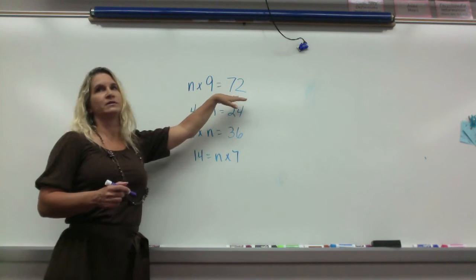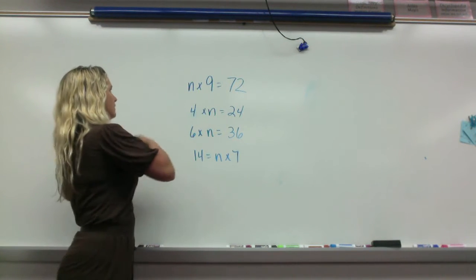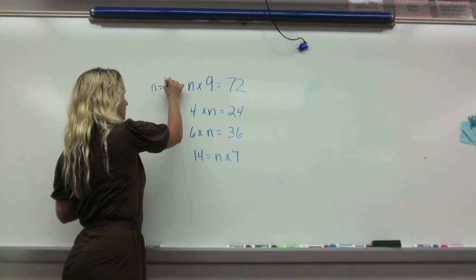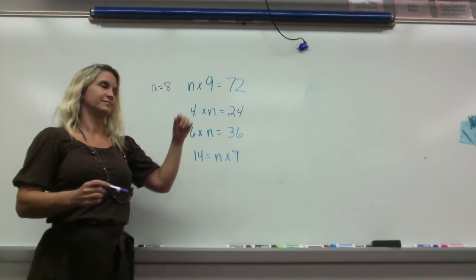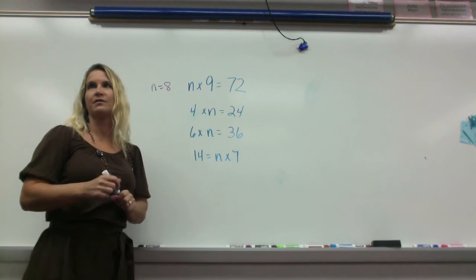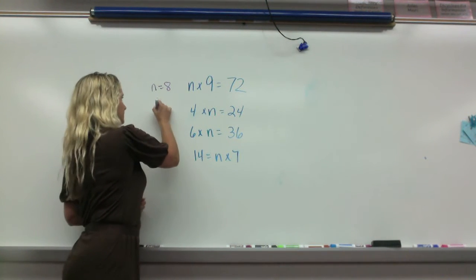So, n times 9 equals 72. What did you guys get for n? 8. Okay. Did you know this is algebra? Yes. Good one. Okay, 4 times a number equals 24. What is that? 6.